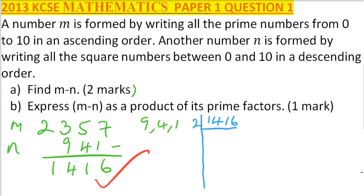We divide by 2, we will get 708. You can use your calculator to do that. You divide by 2 again, you get 354. You divide by 2 again, you get 177, and when you divide by 3, you get 59. 59 is a prime number. So we leave it like that, and we will be able to write our prime numbers.